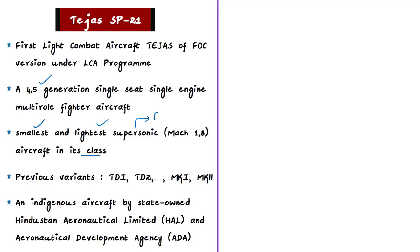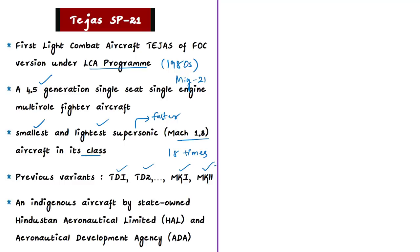The maximum speed of Tejas SP-21 is Mach 1.8, meaning it can fly up to 1.8 times the speed of sound. It is developed under the Light Combat Aircraft (LCA) program, which started around the 1980s to replace the aging MiG-21 aircraft. Many variants — TD1, TD2, Mk1, Mk2 — were developed under this program, but SP-21 is the first variant to get the Final Operational Clearance (FOC) certification by DRDO.